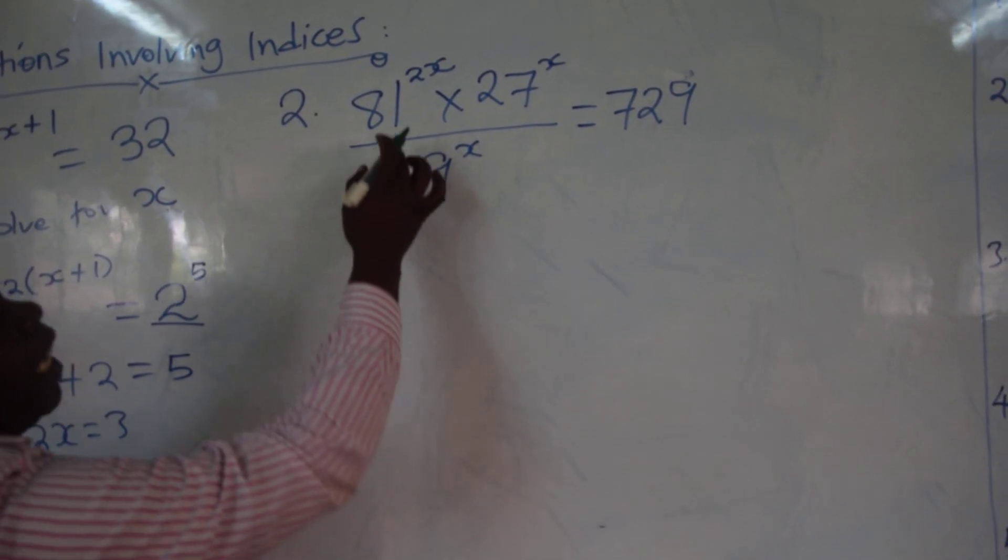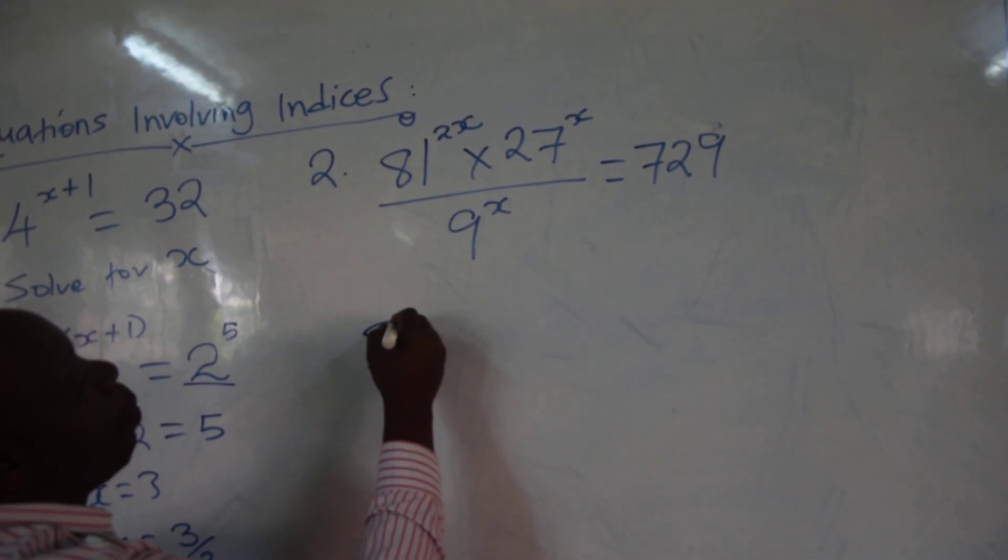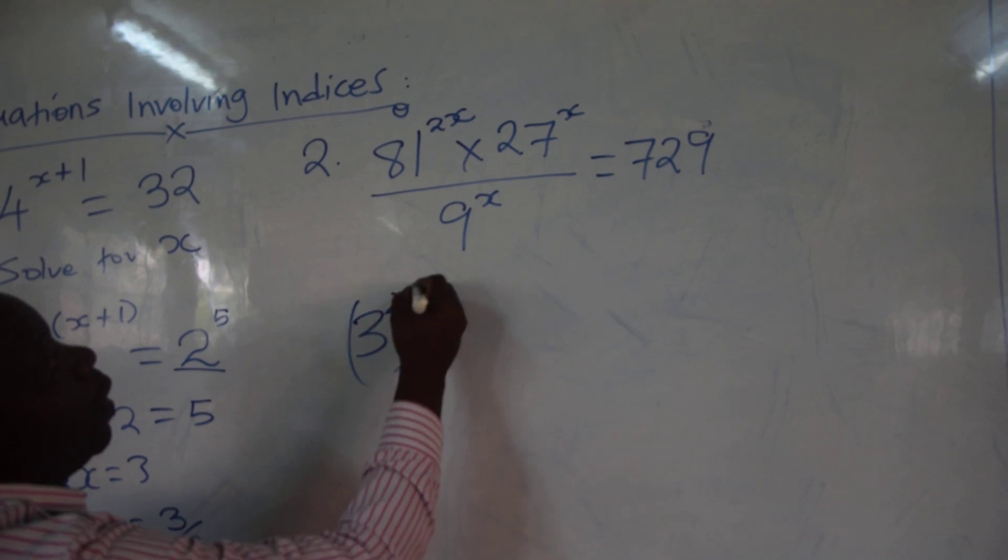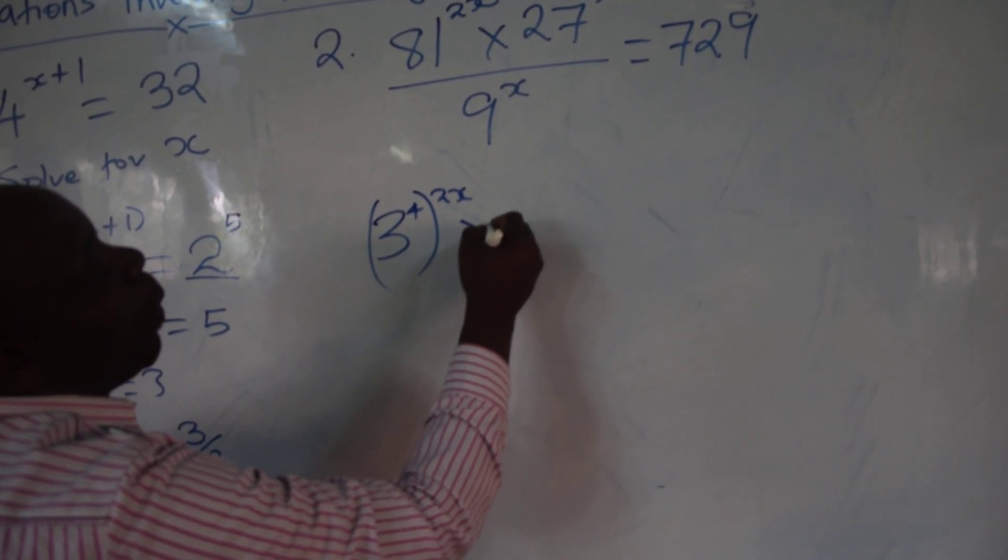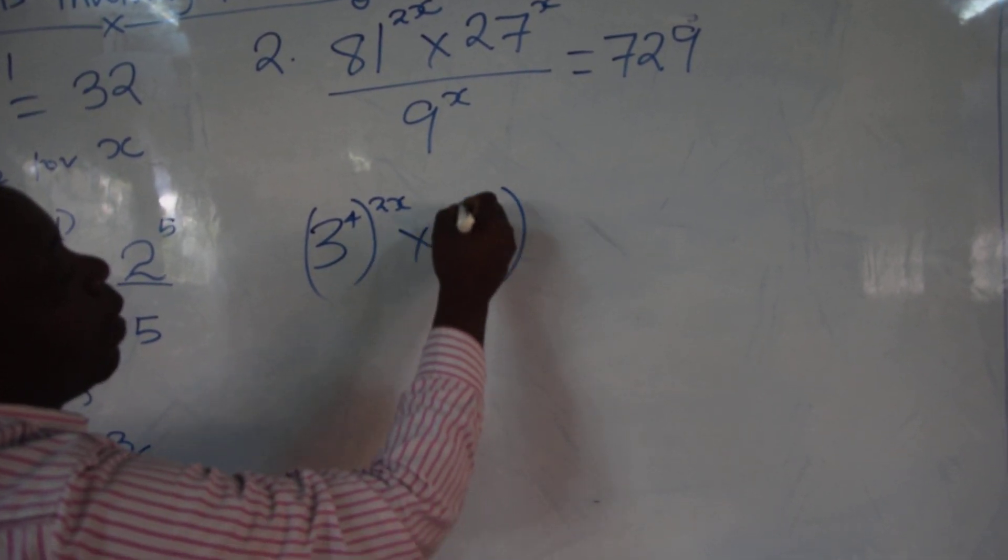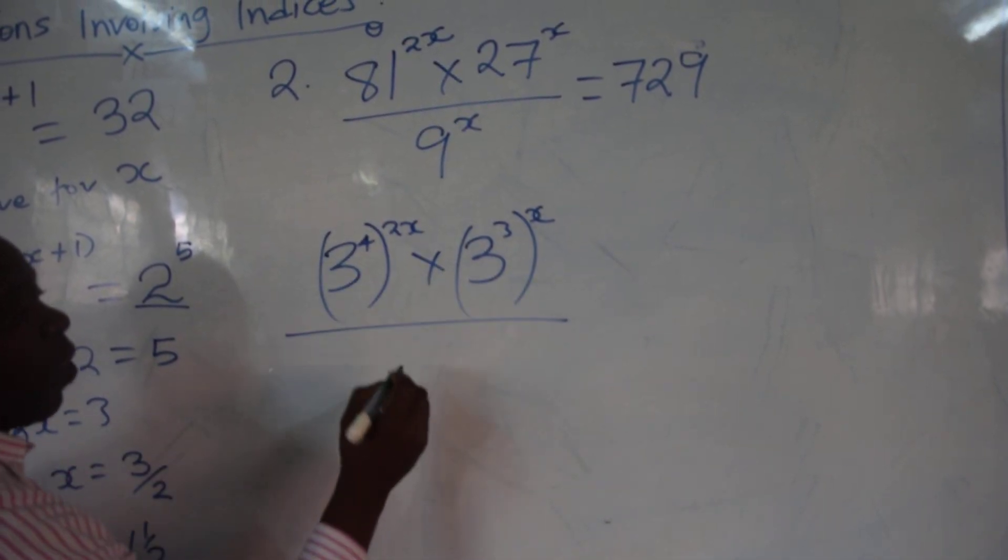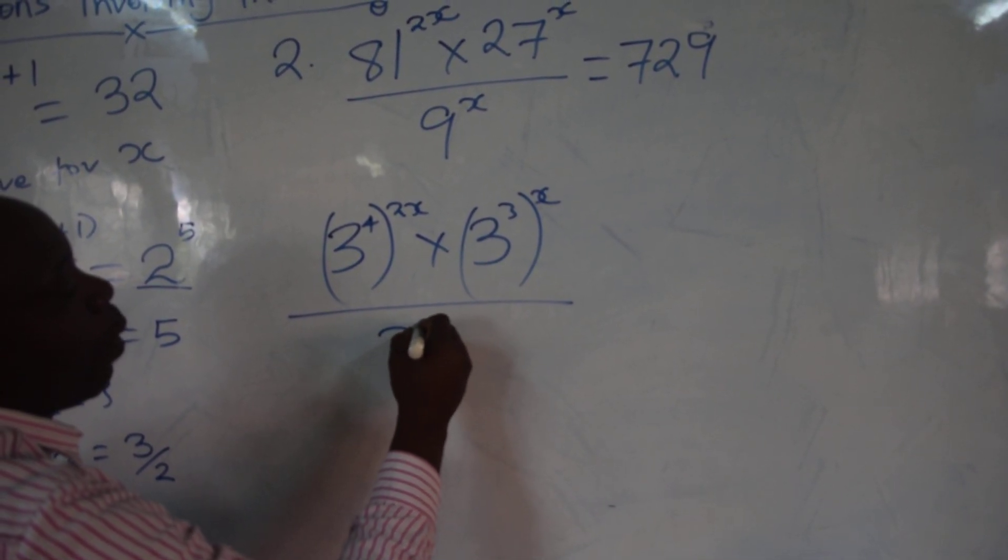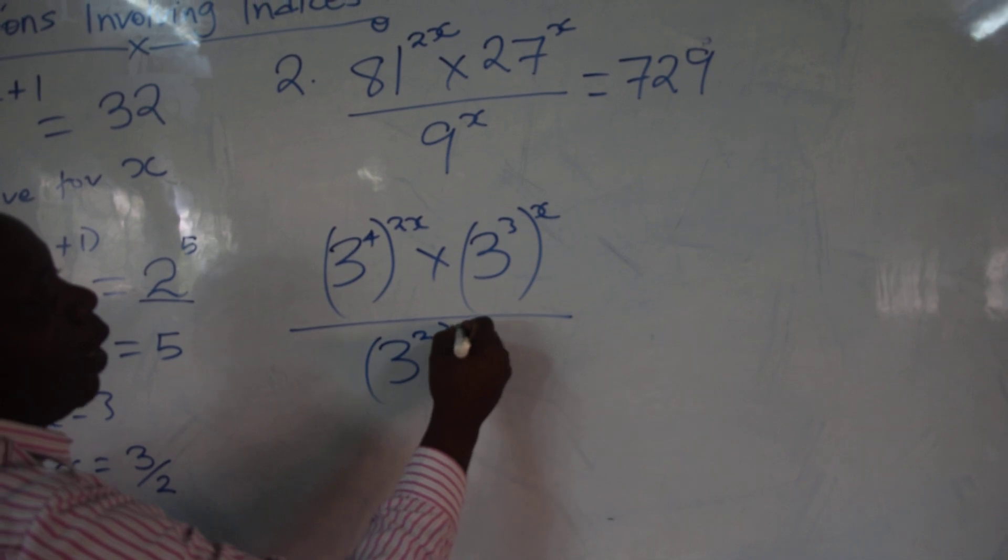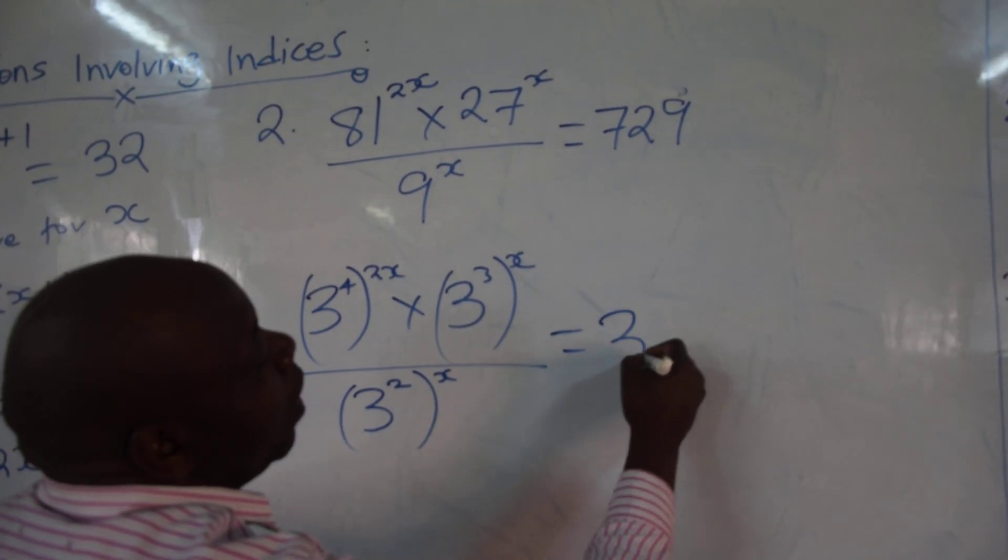We have seen, here, start by writing 81 in index form, which is 3 power 4, multiply by 27 in index form, which is 3 power 3, all that power x, over 9 in index form, which is 3 power 2, power x. Which is equal to 729, which is 3 power 6.